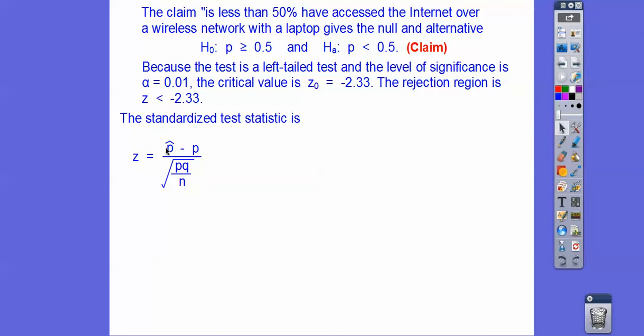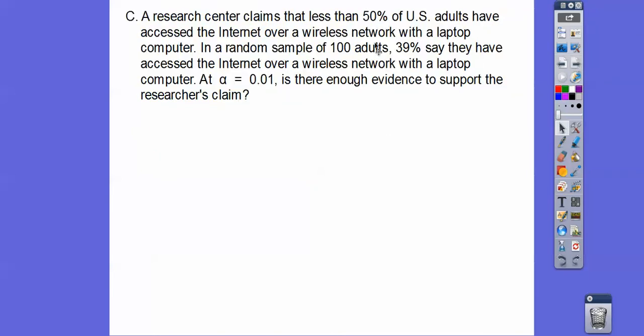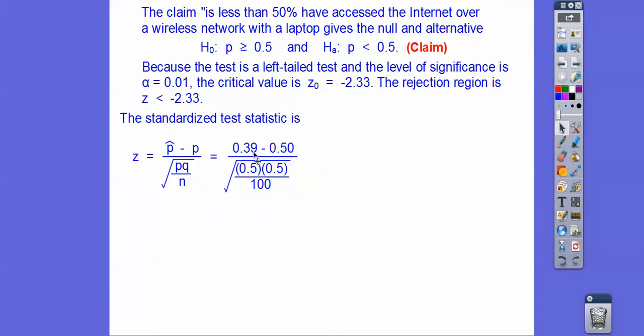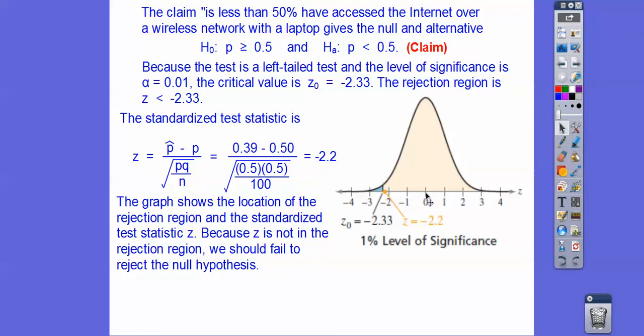So it's 39% and 50%, and N is 100. This is 0.39 minus 0.50, divided by the square root of (0.50)(0.50)/100. You get negative 2.2. Here's our bell curve. I draw three standard deviations to the left and right. Our Z score for the rejection region is past -2.33, and this -2.2 is to the right of that. The graph shows the location of the rejection region and our standardized test statistic. Because Z is not in the rejection region, we fail to reject the null hypothesis.